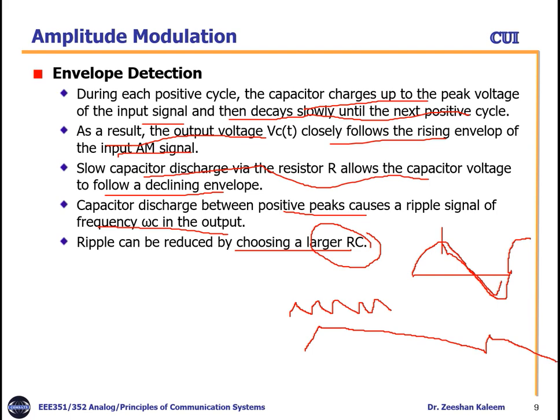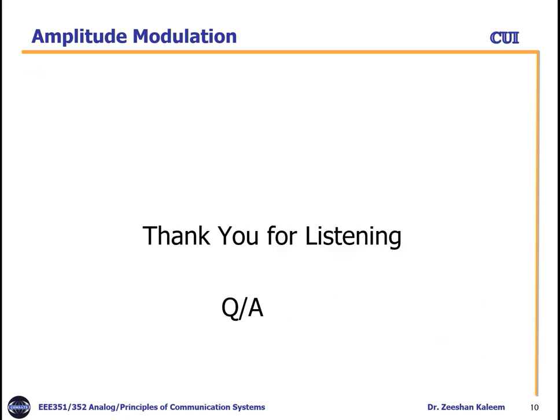These were the two methods: rectifier-based detection and envelope detection. These two methods are used to detect the AM signal on the receiver side and are called AM signal demodulation. Thank you for listening. For a question-and-answer session, there will be a separate slot — if you have any questions, please prepare, and the exact date and time will be communicated to you later.